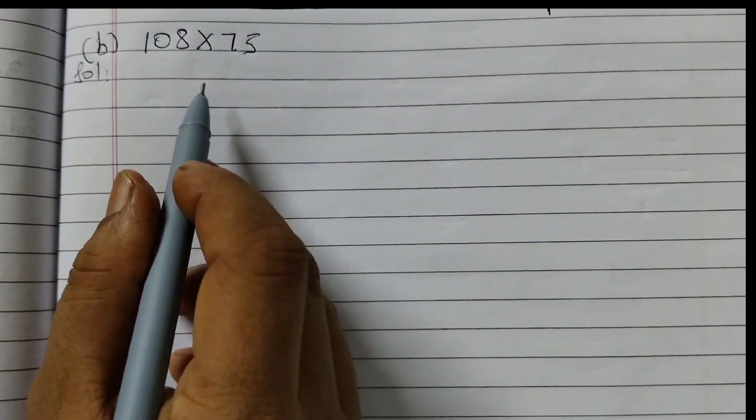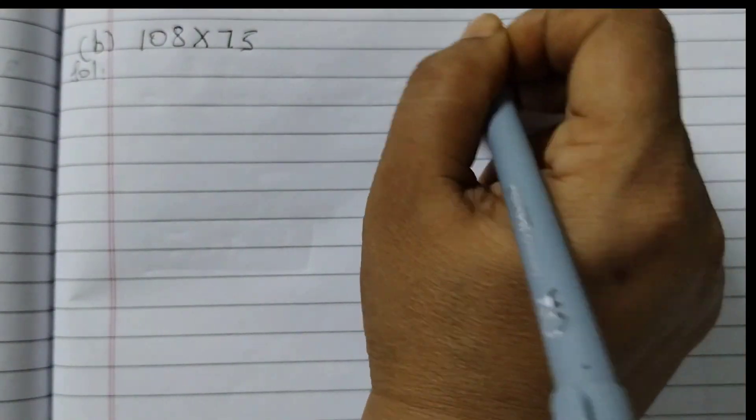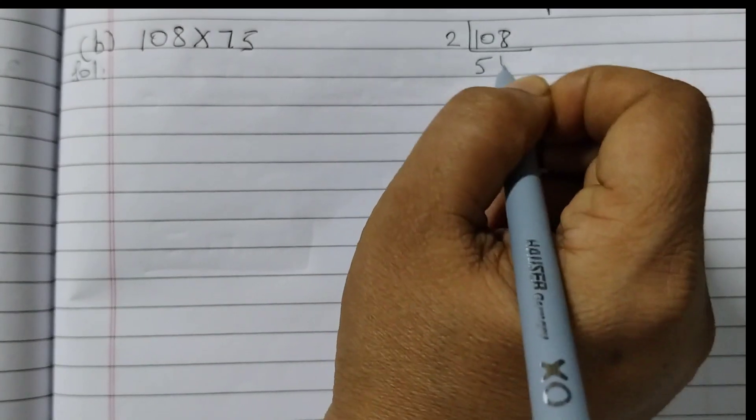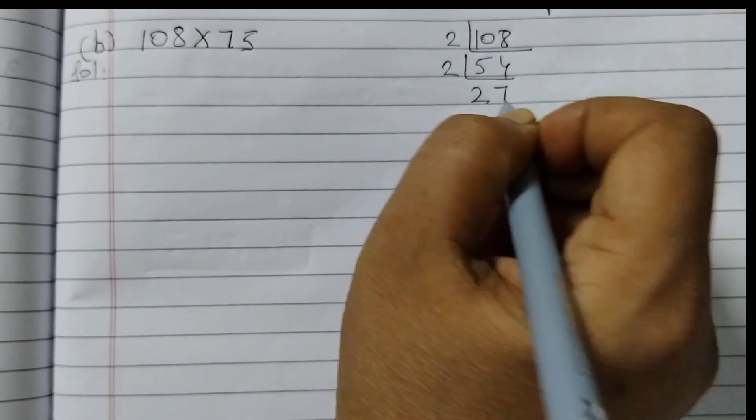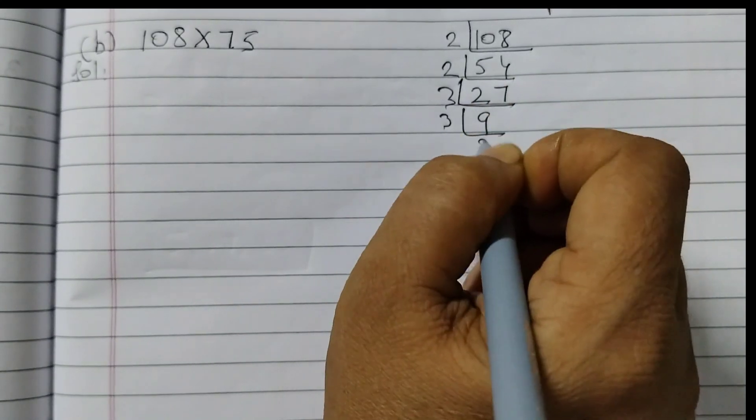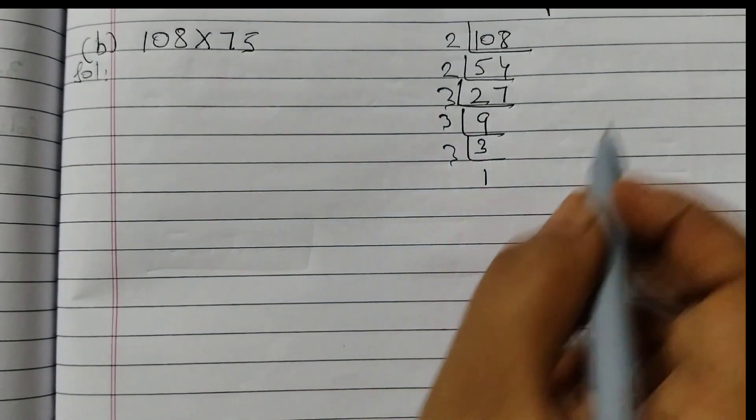Next one is 108 into 75. So 108, first we will find the prime factors. 8 is here, divide by 2. 2×5 are 10, 2×4 are 8, 2×2 are 4, 2×7 are 14, 3×9 are 27, 3×3 are 9, 3×1 are 3. So these are the prime factors of 108.